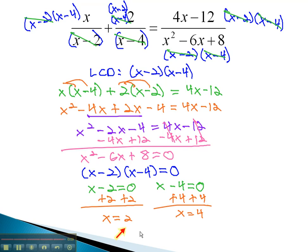However, if we plug 2 into the first factor, we get 0. And if we plug 4 into the first factor, we get 0. Both get thrown out, and there is no solution.